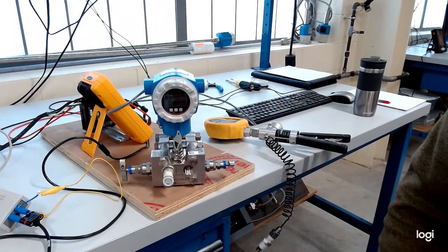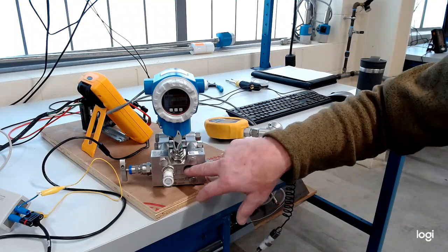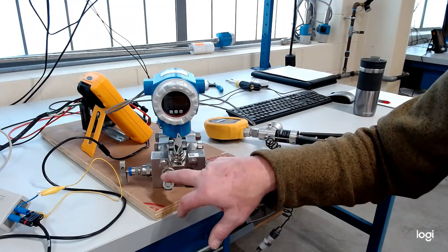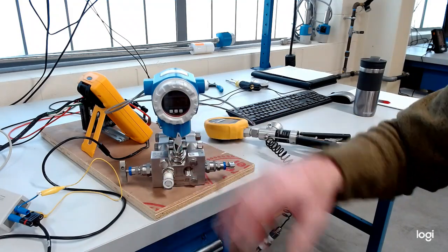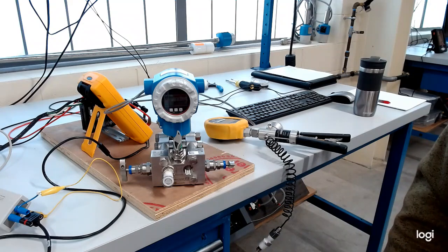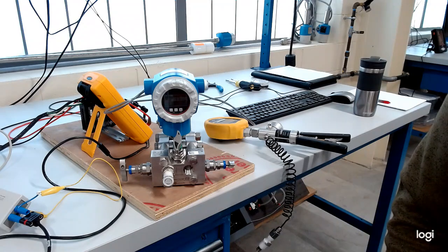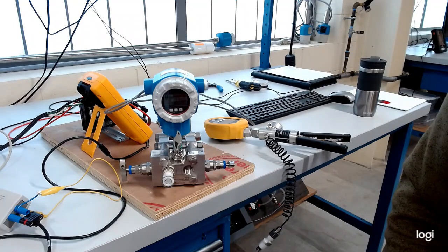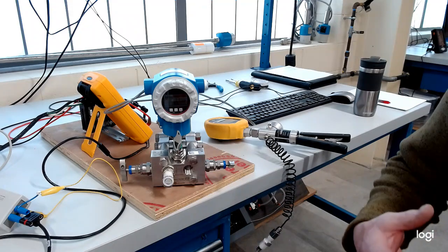However, if you have a higher pressure on your low side and a lower pressure on the high side, you will see a negative reading. And so those are situations where we start talking about zero suppression and zero elevation.